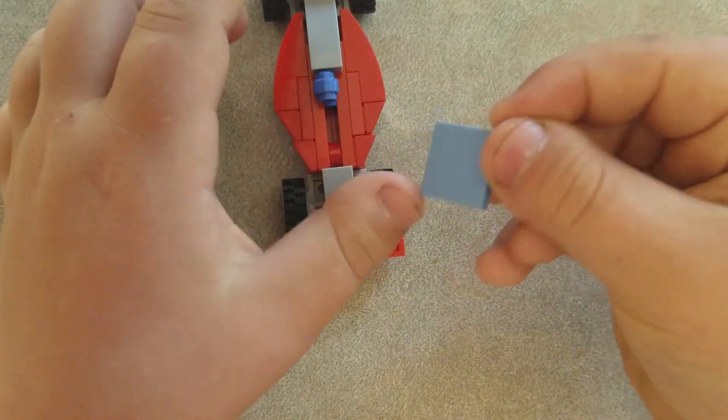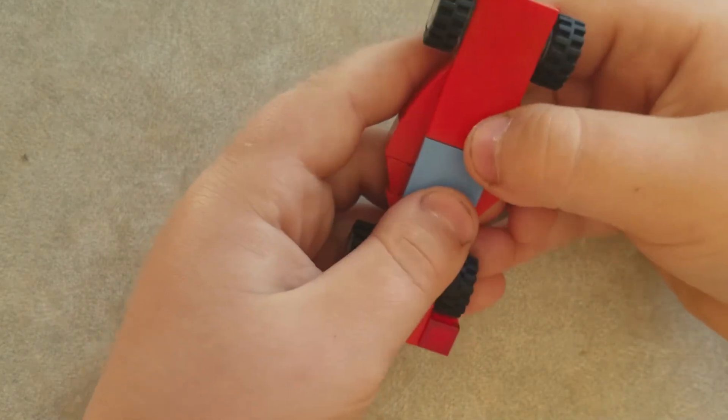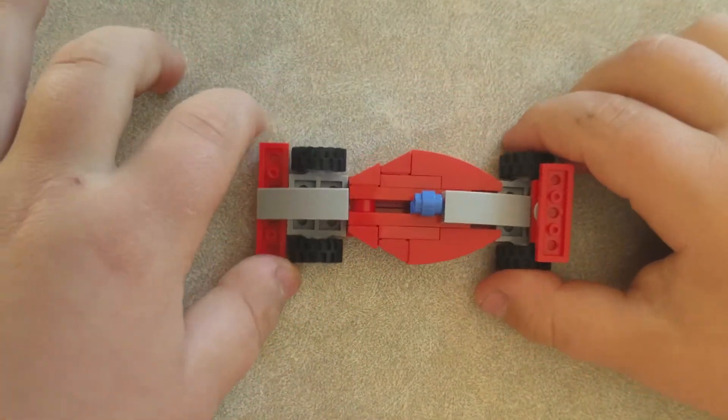Then you see this blue smooth plate, flip it over and put it in the middle like that. There, you're done your race car.